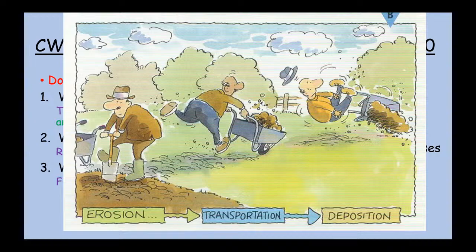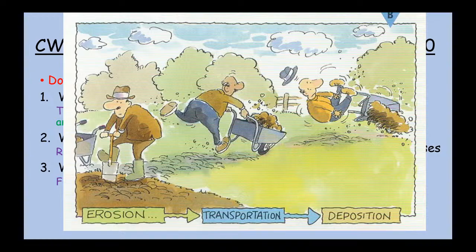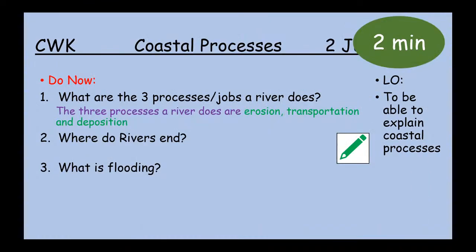The gardener then puts the material in a wheelbarrow and starts taking it somewhere else across the garden — that's transportation. Rivers do the same thing: they move material along the river. Finally, intentionally or by accident, the material is deposited — it's put down somewhere. Rivers do the same: they leave material somewhere because they lose energy and are no longer able to carry it. There are four erosion processes, four transportation processes, and one deposition process. The river ends and joins the sea at the mouth.